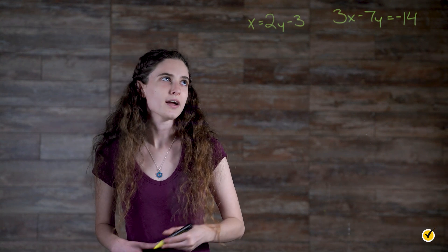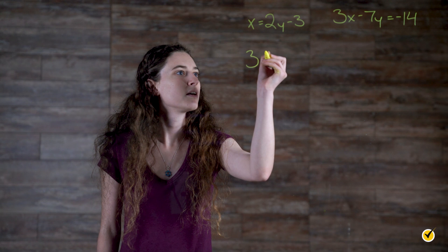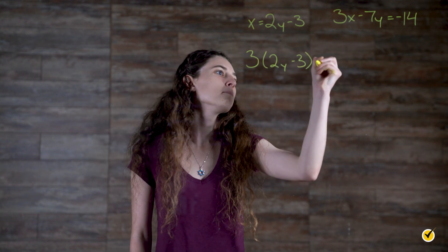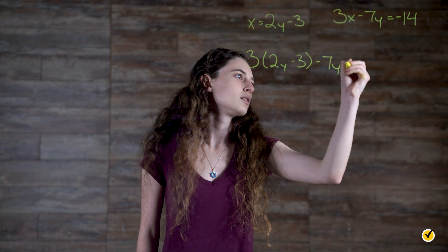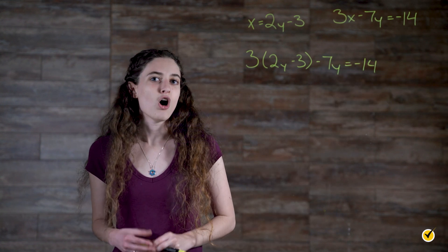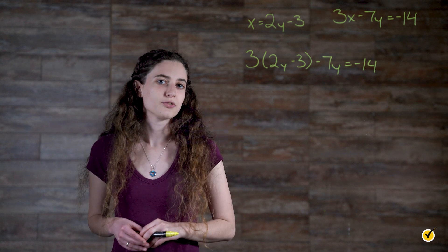So now, instead of 3x minus 7y, we have 3 times 2y minus 3 minus 7y equals negative 14. As you can see, all we have to do now is solve this equation for y.